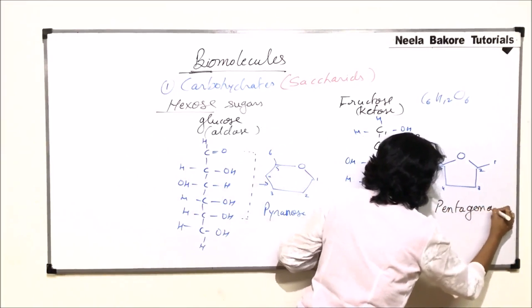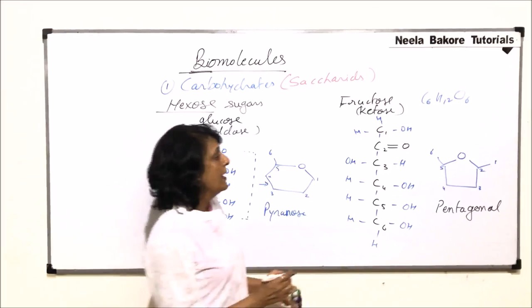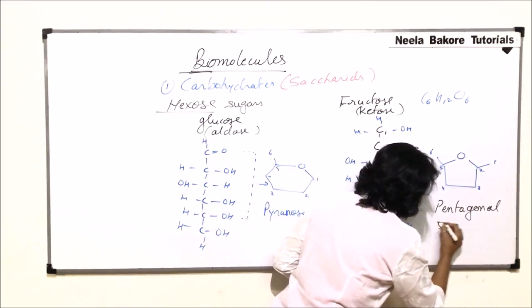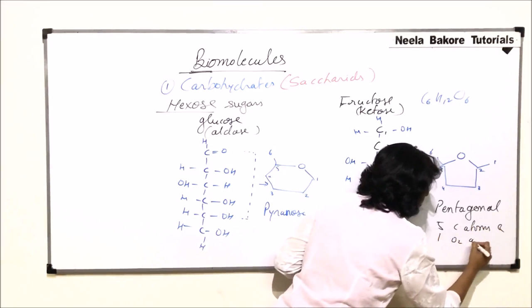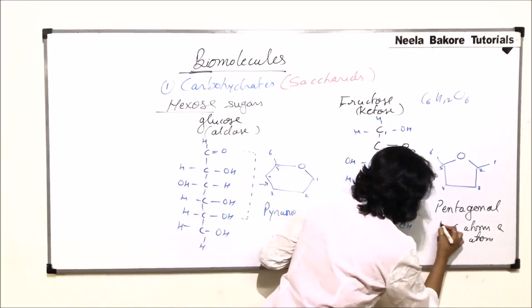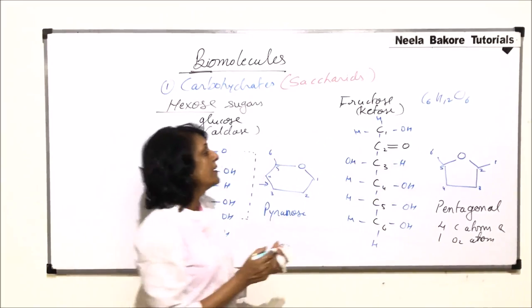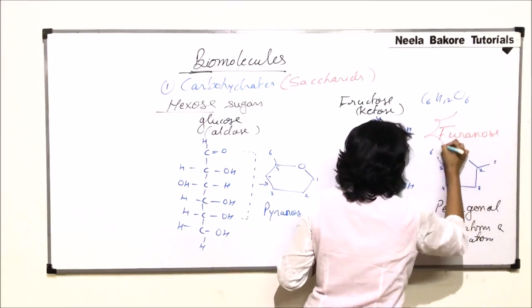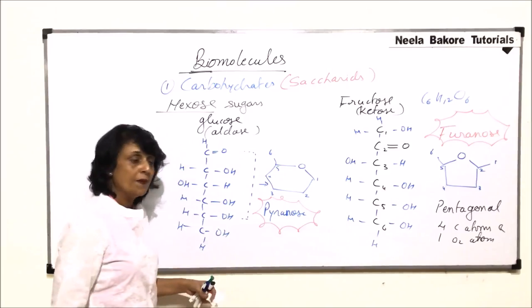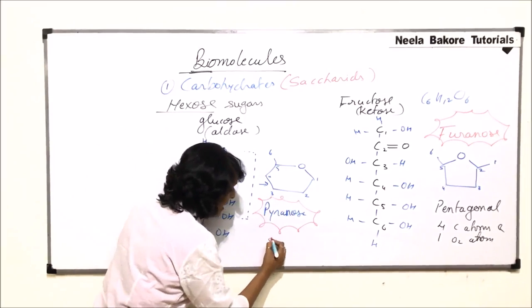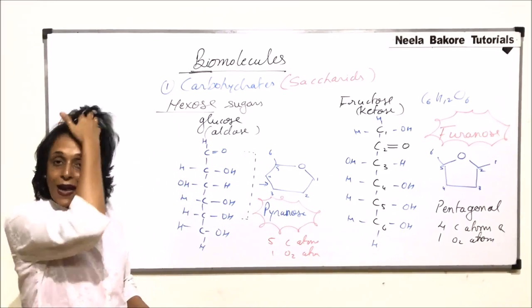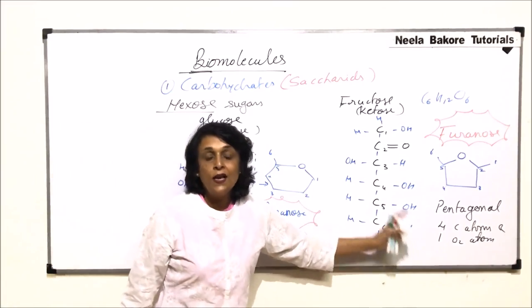This pentagonal ring contains four carbon atoms and one oxygen atom. Such a ring is known as a furanose ring. To summarize: a ring which is pentagonal is furanose, and a ring which is hexagonal is pyranose. In pyranose there are five carbons and one oxygen in the ring, whereas in furanose there are four carbon atoms and one oxygen. So fructose gives a furanose ring and glucose gives a pyranose ring.